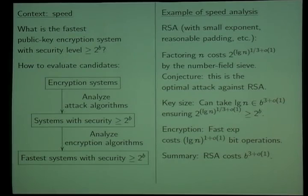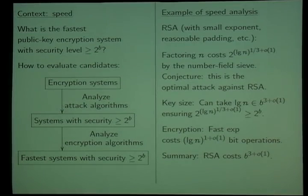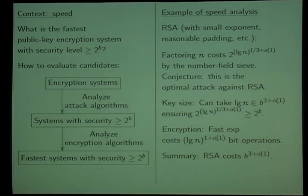Once you know this — two to the cube root of log n — if you want that to be at least two to the B, that means cube root of log n has to be at least B, so log n should be like B cubed. Then once you know that log n, your number of bits in your RSA modulus n, is B cubed, you look at how fast the encryption algorithms are. Asymptotically it's something essentially linear in log n, which means at the end of the day that RSA encryption costs B cubed bit operations.